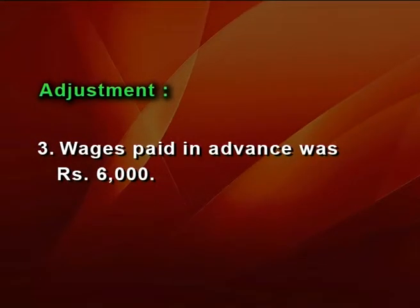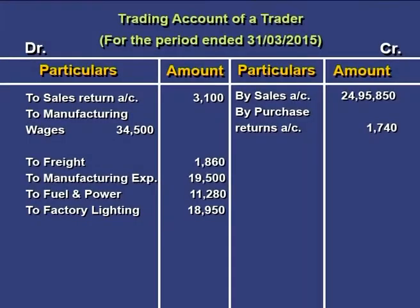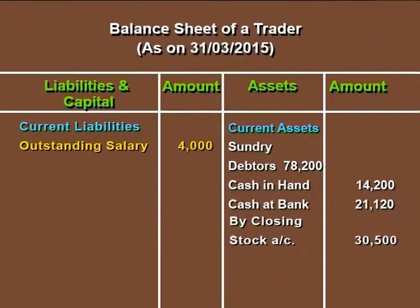Moving on to the third adjustment: wages paid in advance was Rs 6,000. This is the opposite kind of adjustment — a prepaid expense. Prepaid expenses are deducted from the concerned expense. This prepaid wages of Rs 6,000 has been deducted from the manufacturing wages of Rs 34,500 reported in the inner column as the first effect of this adjustment.